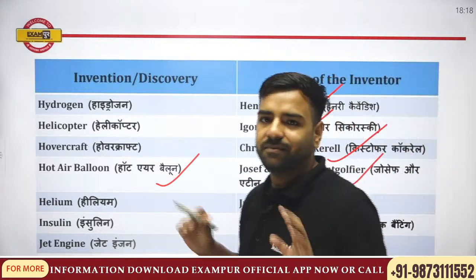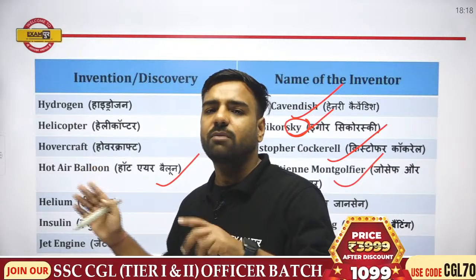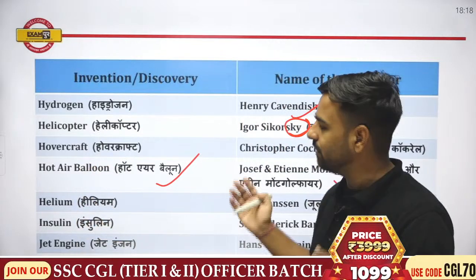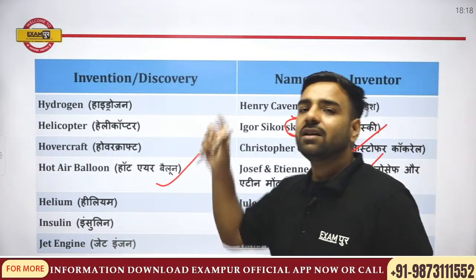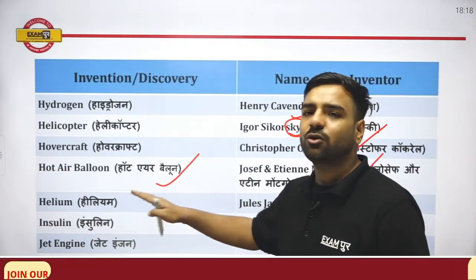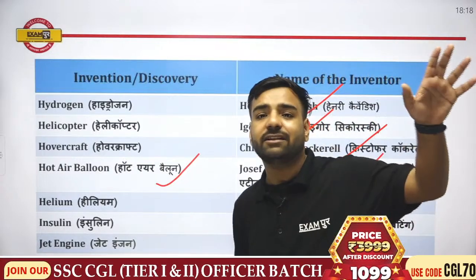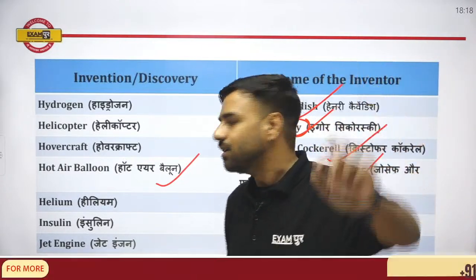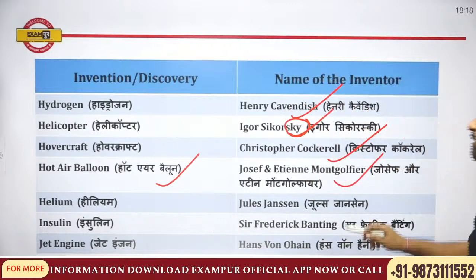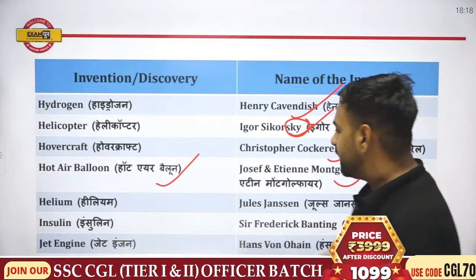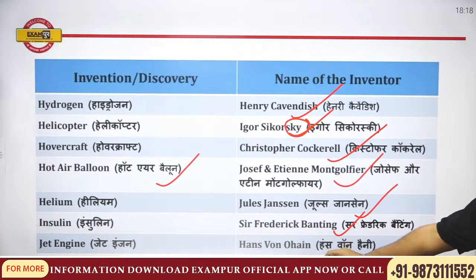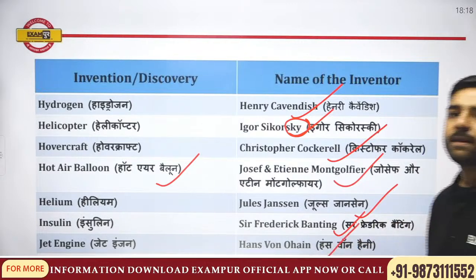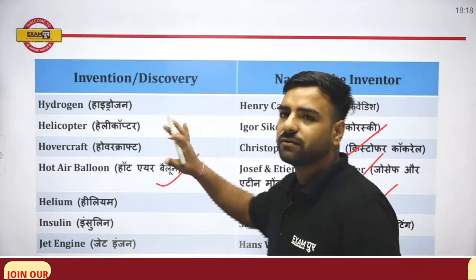Helium is a noble gas in the eighteenth group with only a duet, not an octet. Helium was discovered by Jules Janssen. Insulin was discovered by Sir Frederick Banting. Jet engine was discovered by Hans von Ohain. These are important inventions and discoveries from this section.